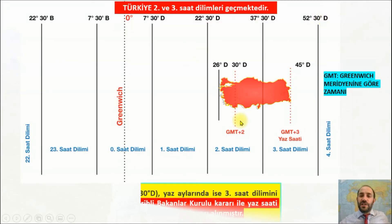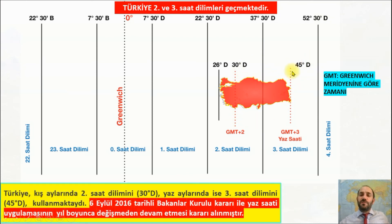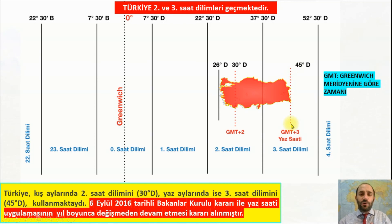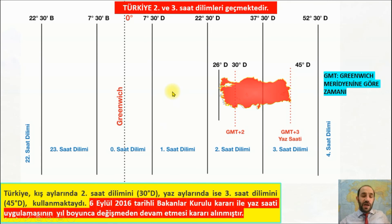Türkiye'nin 2. ve 3. saat diliminde olduğunu unutmayalım. Şu an için 45 derece doğu meridyenini kullanıyoruz. Eskiden 30 ve 45 derece doğu meridyenini yaz ve kışın saatleri ileri-geri alırdık; 2015 yılı itibariyle kaldırıldı. GMT+3 yani Greenwich'e göre 3 saat ilerideyiz. 6 Eylül 2016 Bakanlar Kurulu kararıyla üçüncü saat dilimini kesin olarak kullanıyoruz.